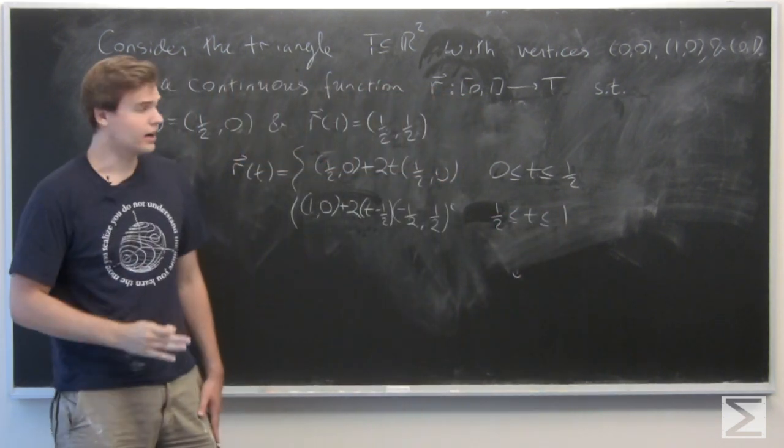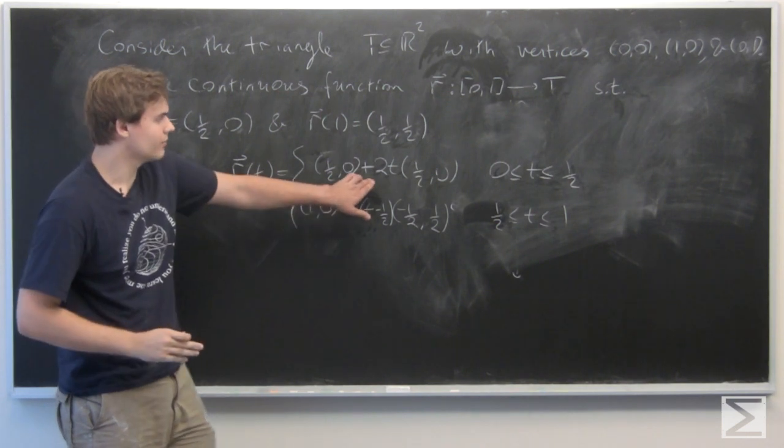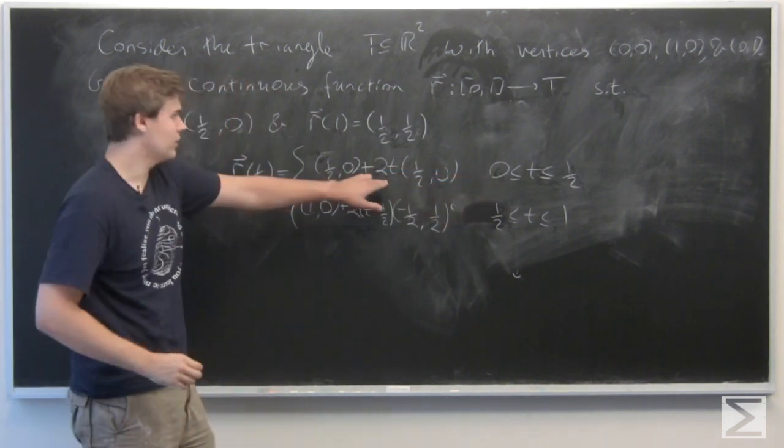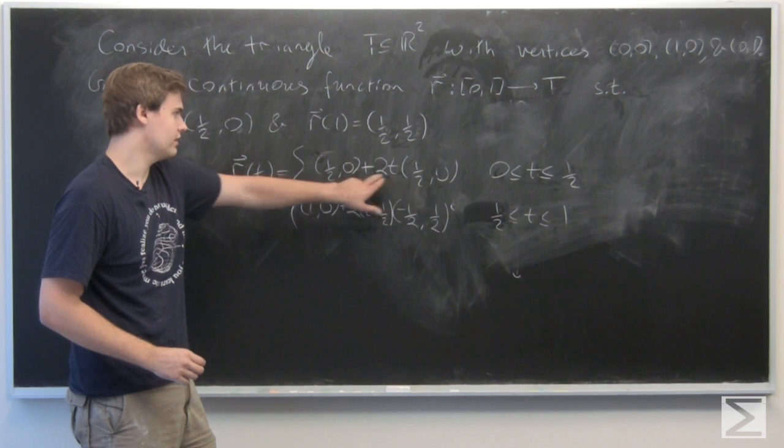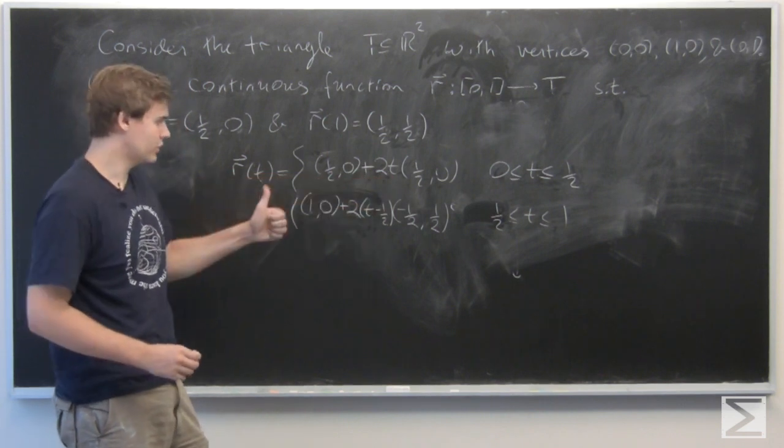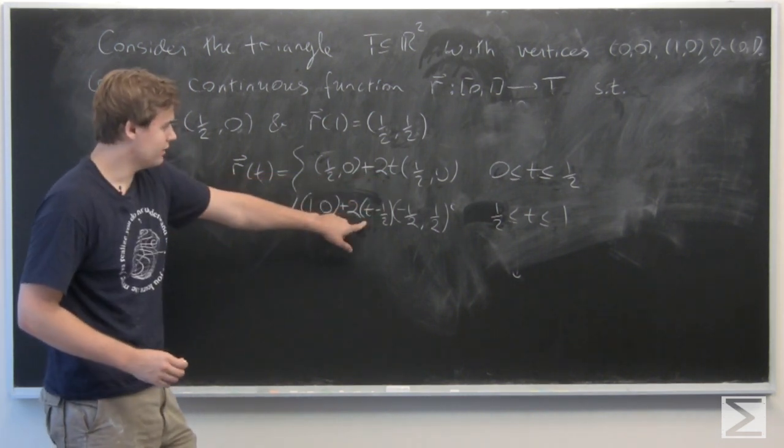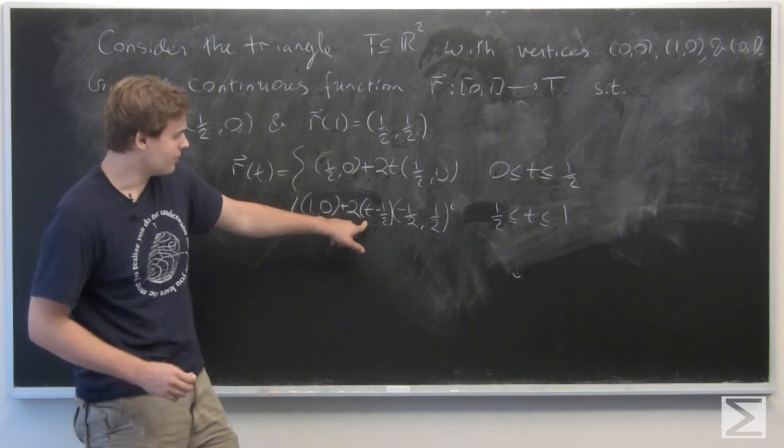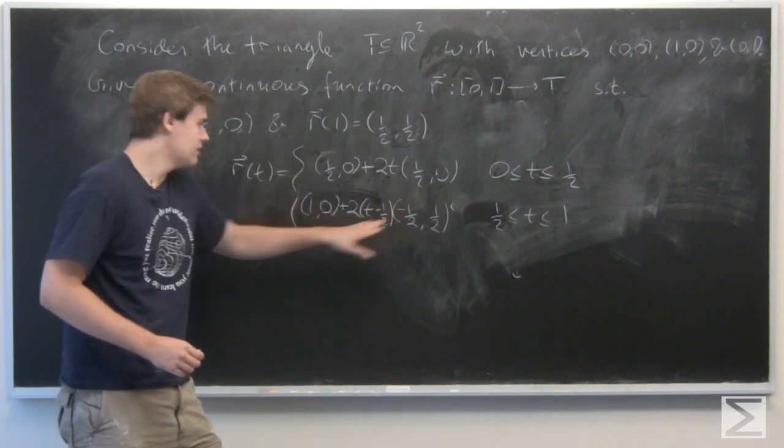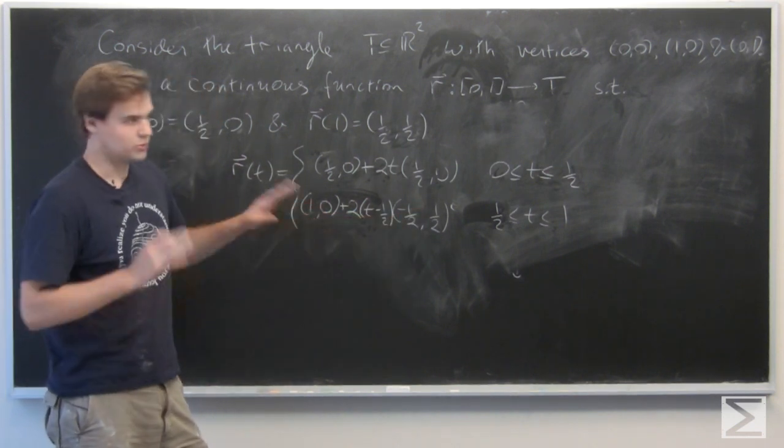Just to make sure this is well defined, at t equals 1/2, plug it in right here. So this is 1, we get (1, 0). Good. Plug it in here, t equals 1/2. Well, this vanishes on the right side, and we just get (1, 0). So the function is well defined.